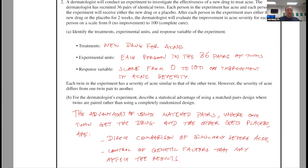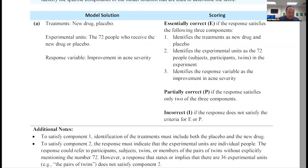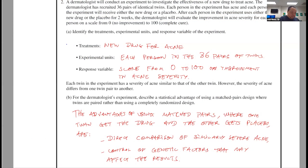Question 2 — this was a question I graded during the reading. Part A asked to identify the treatment, experimental units, and response variable. I got the response variable and experimental unit correct, but I did not get the treatments correct. There are two treatments: the drug and the placebo. I only identified the drug, not the placebo, so I lost points. The rubric's component 1 identifies treatment as new drug and placebo, component 2 identifies experimental units as the 72 people, and component 3 identifies the response variable as improvement in acne severity. I got components 2 and 3 but not 1 — so this part is a P.